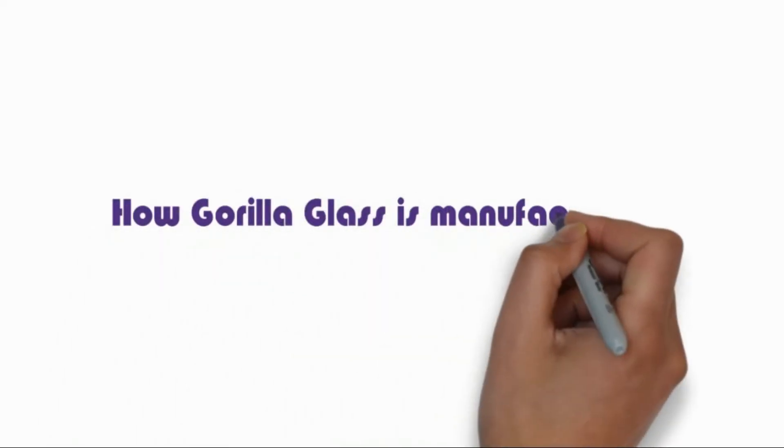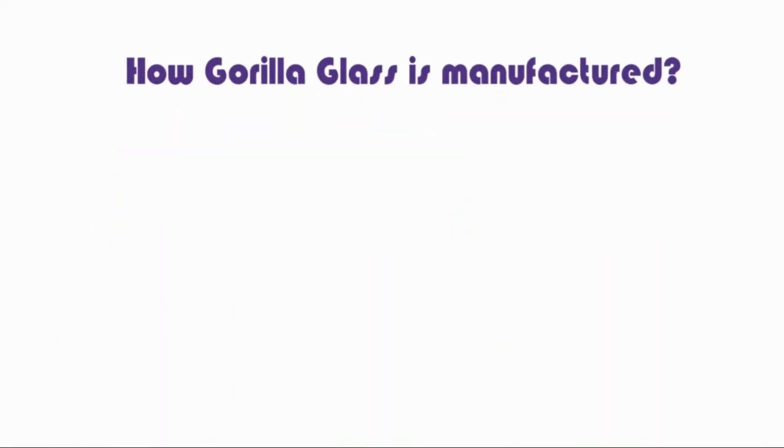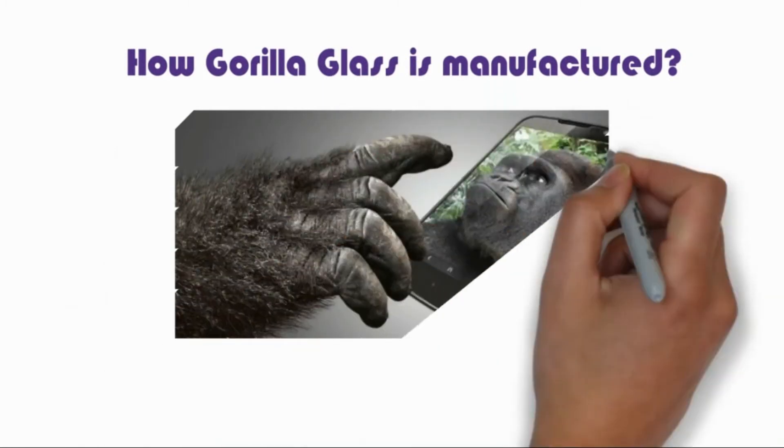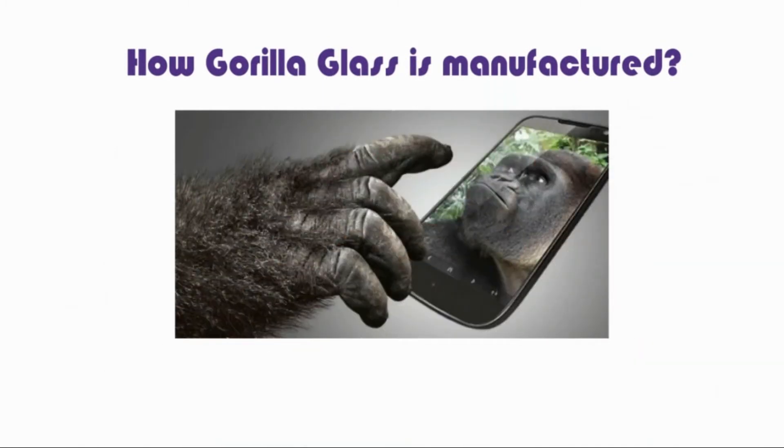How Gorilla Glass is Manufactured. Gorilla Glass provides outstanding performance and durability, with distinct advantages over other materials. It is used in most smartphones available today.